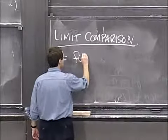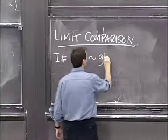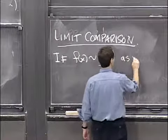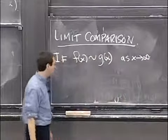If a function f is similar to a function, asymptotically the same as a function g, as x goes to infinity, I'll remind you what that means in a second.